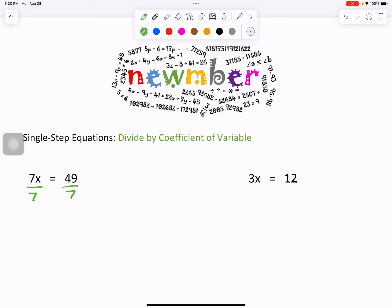7 divided by 7 is 1, bringing us down our x. And how many x do you see? Yes, just 1, so we do not need to put the 1 in front of it. Equals 49 divided by 7 is 7. Circle your answer.